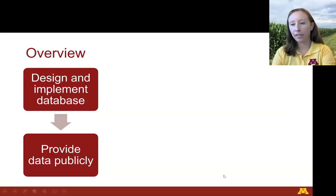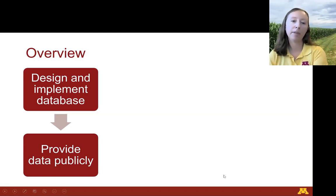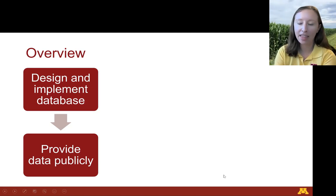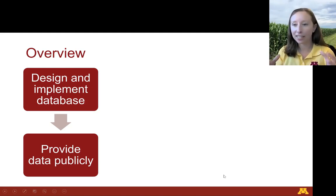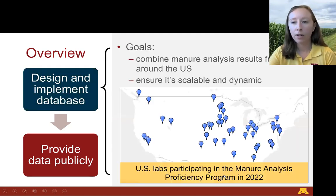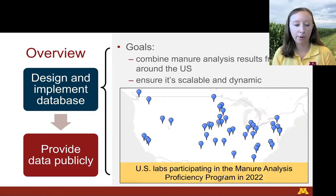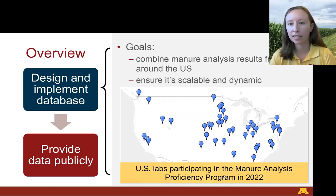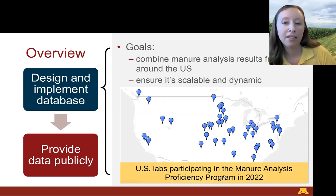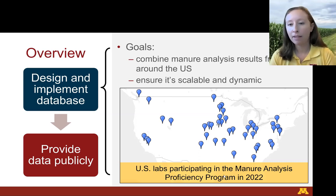Overall we had a couple different activities that we're going to be doing with this project. We plan to design and implement the database and then think about how we can create an access point to the data so that the public can reach it. Our overall goals are to combine manure analysis data from labs across the U.S. We realized once we dug into the details of where that data came from in the manure book values through the ASABE or the Midwest Planner Service that the data sets used were pretty small — about 200 samples or so — and oftentimes from limited regions.